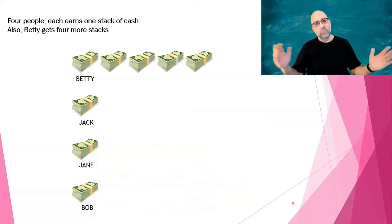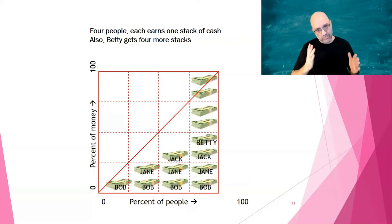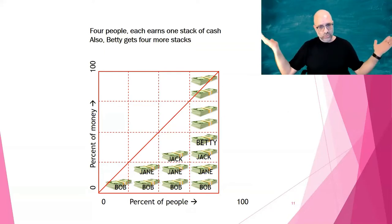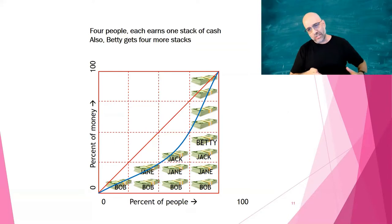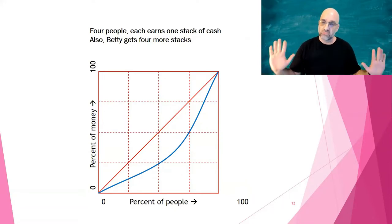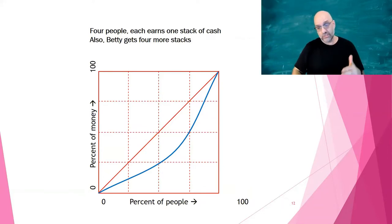Now a slightly more realistic situation: Betty has four more stacks, so now she has five stacks of cash while Jack, Jane, and Bob still only have one. Going back to our grid, Bob, Jane, and Jack stack up to three stacks, but that's no longer 75% of the money, because Betty in the last column has five stacks. So that line of equality — that one-to-one slope — doesn't fit anymore. It pulls down because Bob, Jane, and Jack don't have that much, then shoots up at the end because Betty has all the rest. We're bending away from that line of equality.